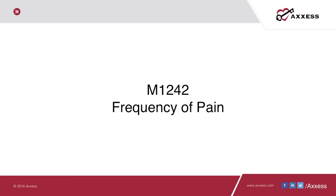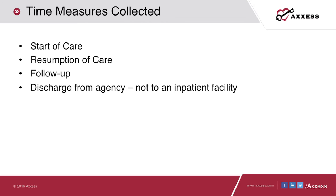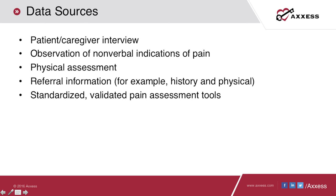M1242, frequency of pain — specifically, frequency of pain interfering with the patient's activity or movement. This indicator is collected at start of care or resumption of care OASIS and again at follow-up or discharge from agency OASIS.